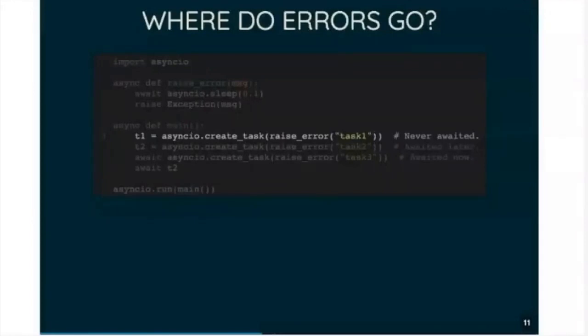The second one, we create a task, and we do await on it, but only later. So it raises its error. The error just sits there waiting in the task object, and then when we await it right at the end of the program, then we get the error, and then it gets raised.